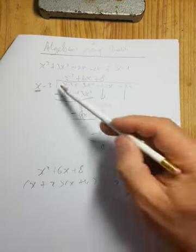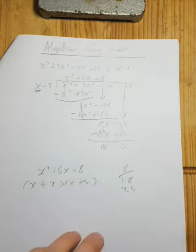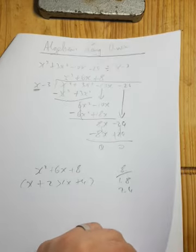So the factors of this cubic equation would be x minus 3, x plus 2, and x plus 4. So I'd like to do one more example. And this is an example of a question where you're missing a term.